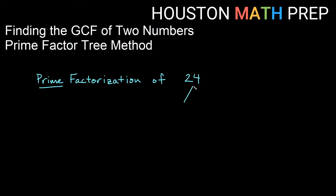With my tree method, the idea is: can I find two things that multiply to give me 24? It doesn't matter what I choose, as long as I don't choose one and the number itself, then I'm going to get somewhere in this process. So if I break 24 into four times six, I ask: are either of these prime numbers? In other words, are they only expressible as one times themselves? And the answer for both of these is no.